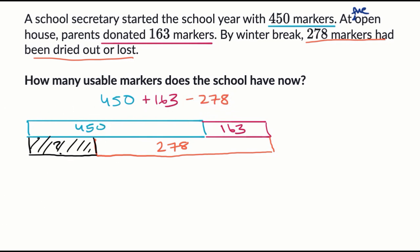So first 450 plus 163, I can expand those out. That's the same thing. Let's see, I think I have space here. 400, I have 400 plus five tens, that's 50, plus zero ones. And then I'm adding 163, that's 100, six tens and three ones.